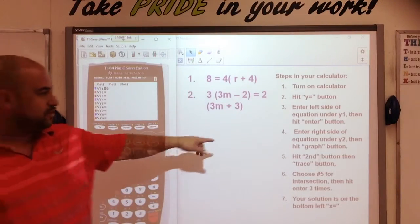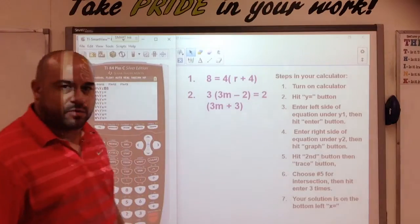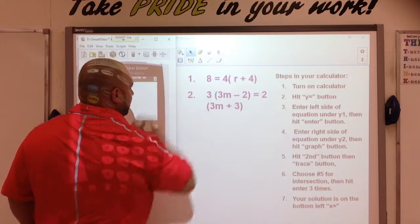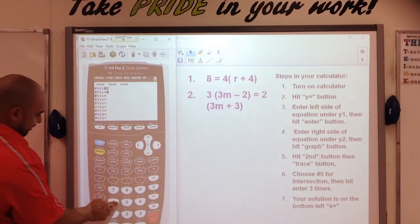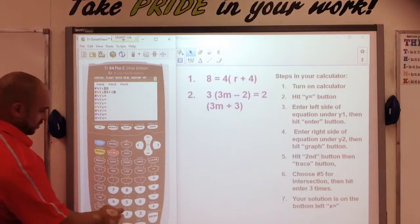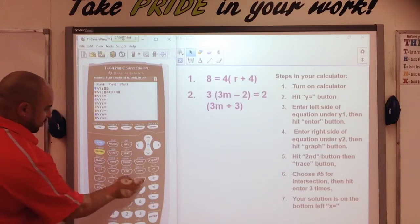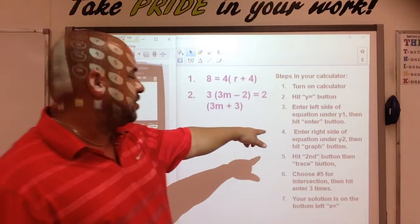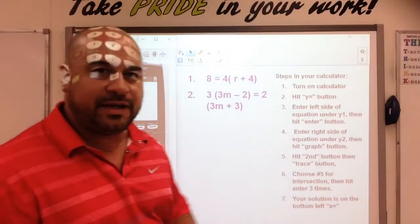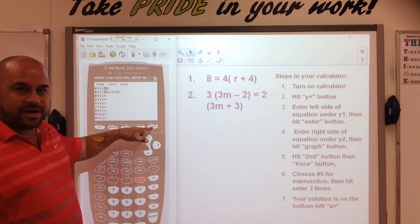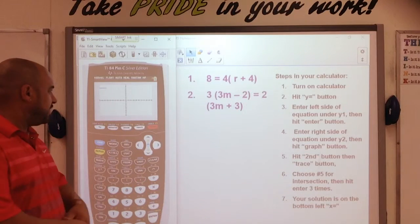Step number four says enter the right side of the equation under y2. So, I have 4 times r plus 4, and I'm going to replace r with x. So, I have 4 in parentheses, x plus 4 in parentheses. And after I enter the right side of the equation under y2, then I'm going to hit the graph button. Graph button is right here on the top right-hand button of your calculator. So, I hit graph.